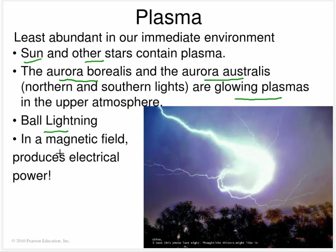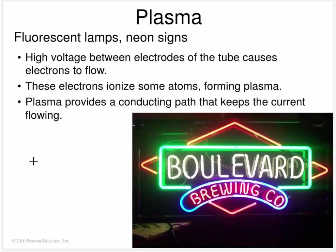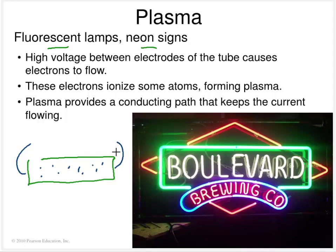If there is a magnetic field, a plasma can actually produce electrical power. More common examples for us are fluorescent lamps and neon signs. If you fill a tube with a certain gas and put high voltage across it, that causes electrons to flow, ionizing or energizing atoms and forming a plasma. Keep in mind that a plasma is an electrified gas with free electrons that can conduct electricity. The current keeps flowing and puts off light, and the type of gas inside dictates the color of the light — that's how we have different color neon signs.